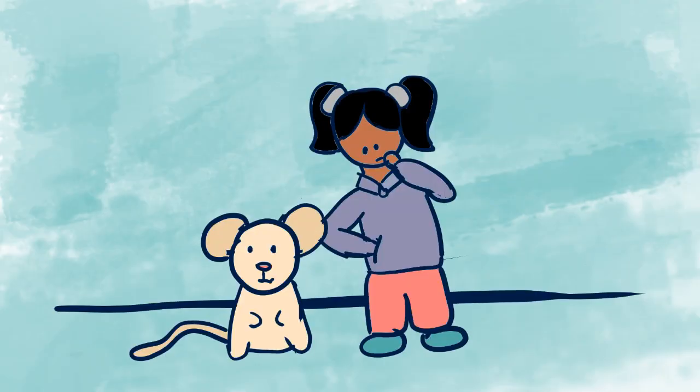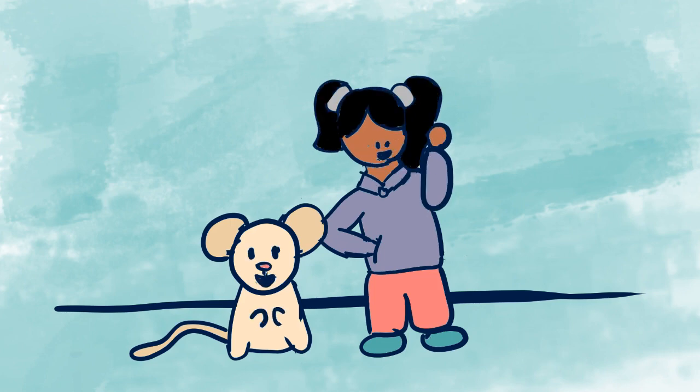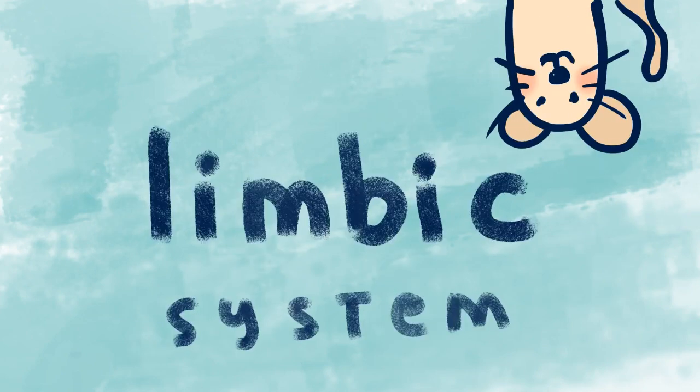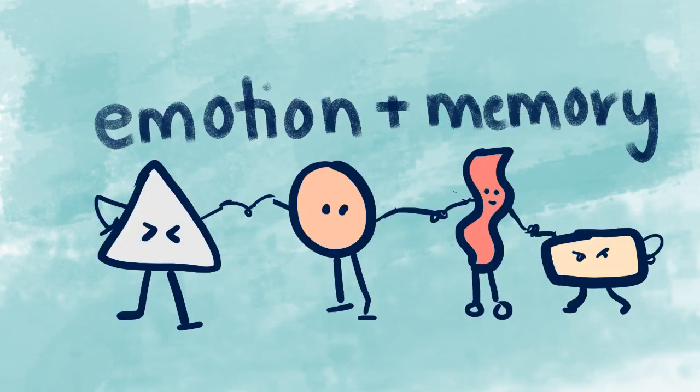While dopamine definitely plays a huge role in food reward and cravings, there's actually a lot more that goes on behind the scenes than just dopamine release and how we get those feelings of 'I really want to eat that.' First, there's the limbic system, which is a group of brain structures that control emotion and memory.